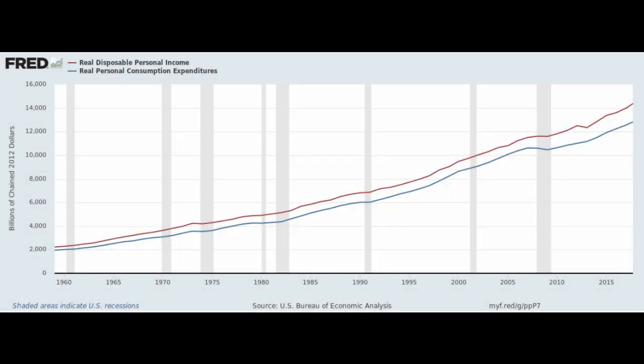Disposable personal income after taxes and consumption, or spending, track each other pretty closely. This is why the consumption function — an equation that relates consumption to disposable personal income — works.